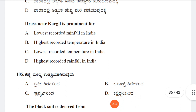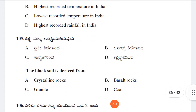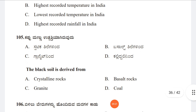Question 105: Black soil is derived from Option A: Crystalline rocks, Option B: Basalt rocks, Option C: Granite, Option D: Coal. The answer is Option B, Basalt rocks.